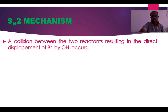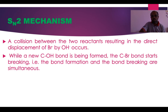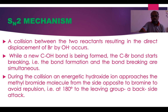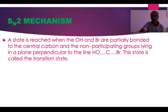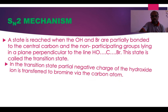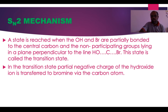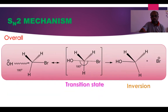In SN2, the OH⁻ nucleophile attacks from the side opposite to the leaving group. The new C–OH bond forms and the C–Br bond starts breaking simultaneously. This is a backside attack at 180 degrees opposite to the leaving group. This proceeds through a transition state where the hydroxide is partially negatively charged, and the charge is transferred to bromine via the carbon atom.